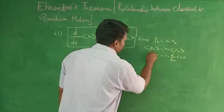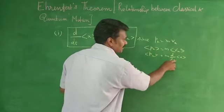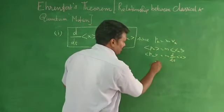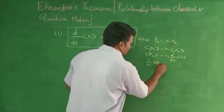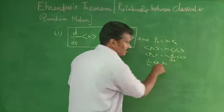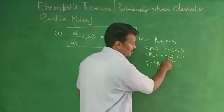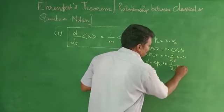So operator vx equals d by dt of operator x. So operator px is equal to m times d by dt of operator x.